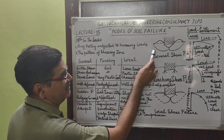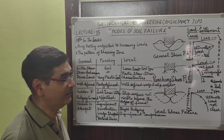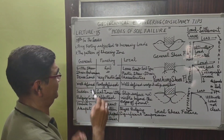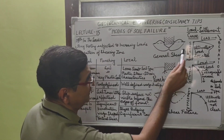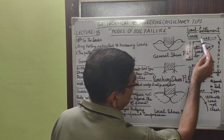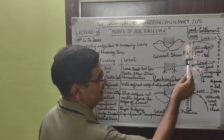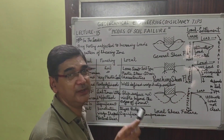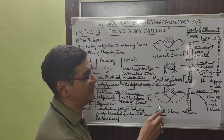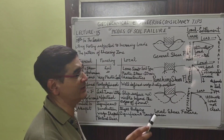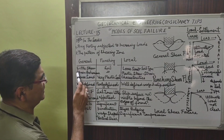The pattern of the shearing zone has been depicted diagrammatically on this board. What needs to be seen is that when we increase the load, the settlement increases — but that settlement is to be controlled within desirable limits as per the respective Indian Standard codes.